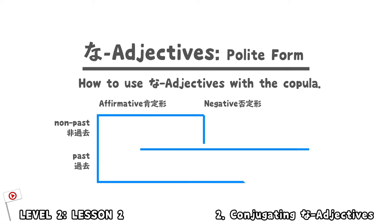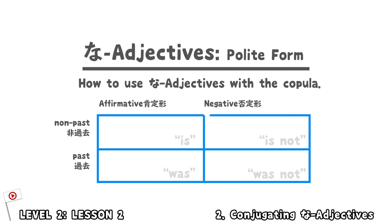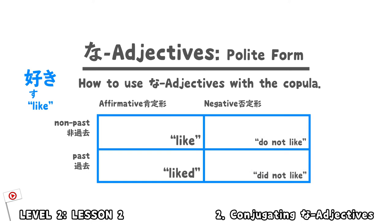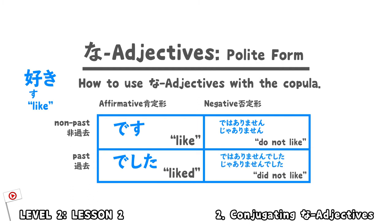Na-adjectives conjugate like nouns. An example of a na-adjective is suki. So you can say: suki desu (I like), suki dewa arimasen or suki ja arimasen (I do not like), suki deshita (I liked), and suki dewa arimasen deshita or suki ja arimasen deshita (I did not like it).